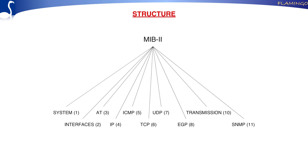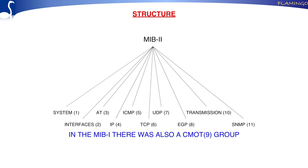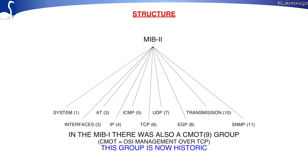This is the naming structure of the MIB-2. We have the system group, interfaces group, address translation group, IP group, ICMP group, TCP group, UDP group, EGP group, transmission group, and SNMP group. Notably, we go up to 8 and miss 9 — that was originally in MIB-1 the branch reserved for CMOT (Common Management over TCP), which is OSI management protocols in the internet world. But CMOT is historic, so in MIB-2 they removed that branch.